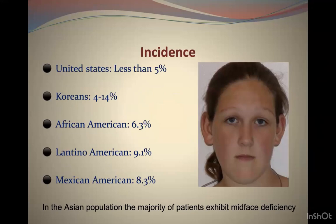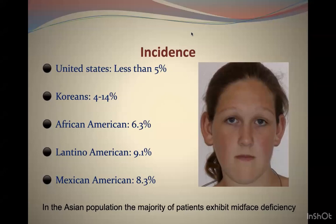The incidence of Class 3 malocclusion varies with the type of population — ethnicity and location. In the United States it is less than 5%, in Koreans 4 to 14%, in African-Americans 6.3%, in Latino-Americans 9.1%, and in Mexican-Americans 8.3%. It is more prevalent in Japanese populations and also very prevalent in the African region.